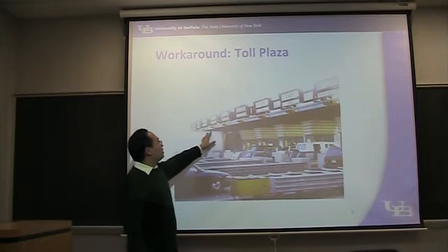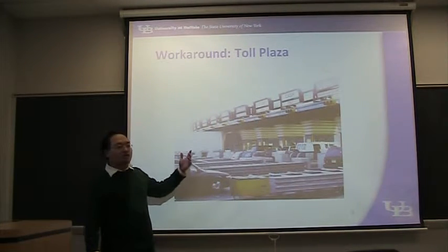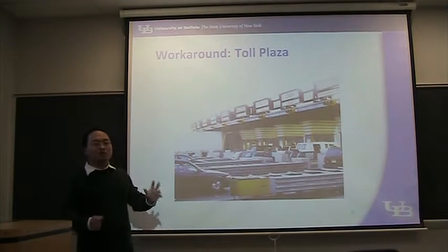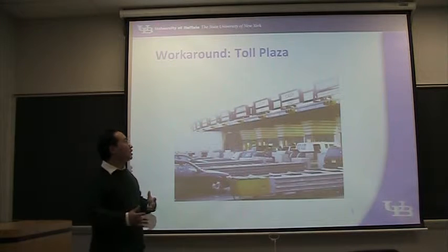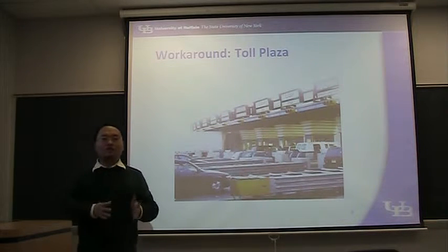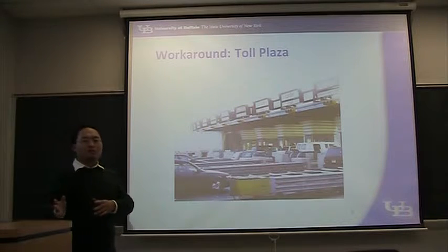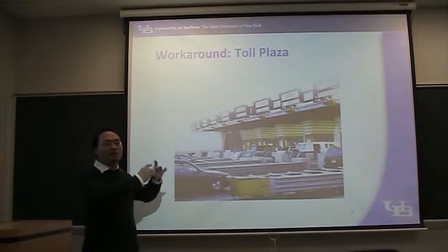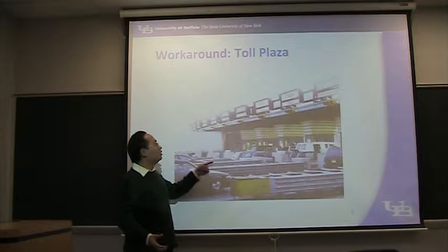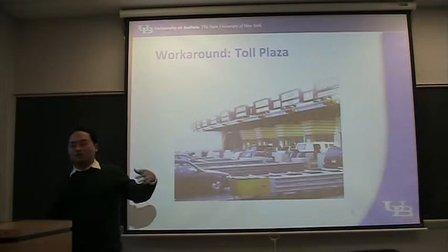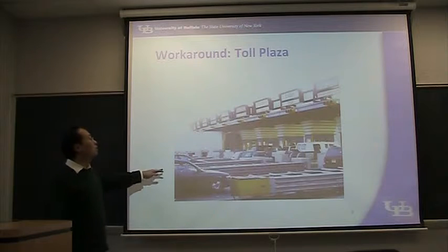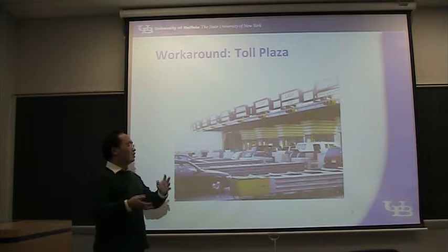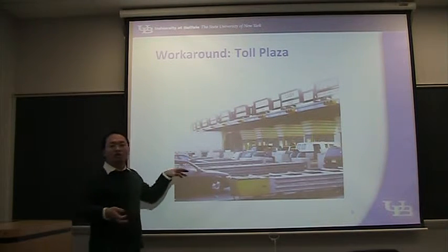At a toll plaza, some vehicles pay by cash and some by EZPass. These can be modeled by lane restrictions. Vehicles with an EZPass device are one vehicle type, and vehicles without EZPass are another type that cannot travel on the EZPass lane. So essentially, you can use a mixture of stop signs, traffic signals, and lane restrictions to model a toll plaza.